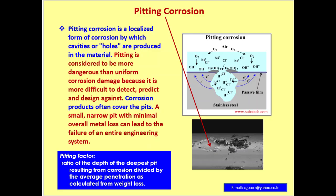Pitting corrosion is a localized form of corrosion by which cavities or holes are produced in the material. Pitting is considered to be more dangerous than uniform corrosion because it is more difficult to detect, predict, and design against. Corrosion products often cover the pits.